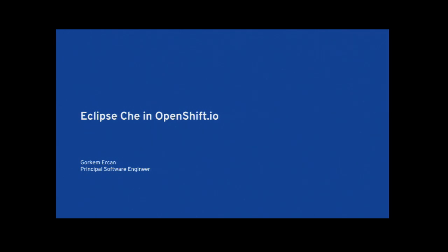My name is Gorkam. I work for Red Hat on various projects. One of them is Eclipse Che. The major contributor to Eclipse Che was a company called CodeMV, which was acquired by Red Hat about six months ago. I also work with several other tools including JBoss tools, VS Code, VS Code Java, OpenShift IO — anything that has to do with developer tooling. Today I'm going to talk about Eclipse Che and demo it in the context of OpenShift IO.